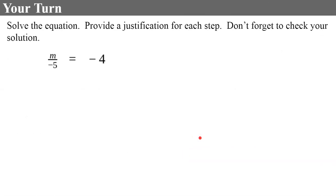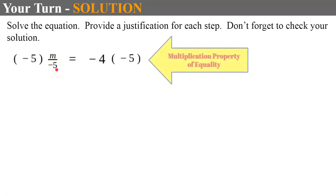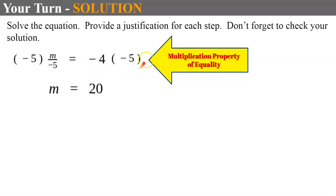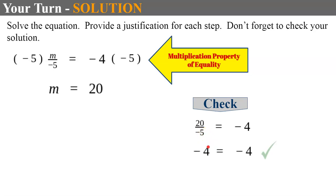Your turn — solve, justify, and check. Pause and come back when you're done. Welcome back. I identify that my variable m is being divided by negative 5. The inverse of dividing by negative 5 is to multiply by negative 5; I multiply both sides by negative 5 using the multiplication property of equality. Simplifying gives me m, and negative 4 times negative 5 is 20. Checking by replacing m with 20: 20 divided by negative 5 is negative 4, and it checks.